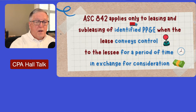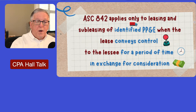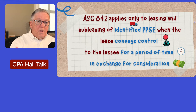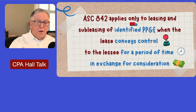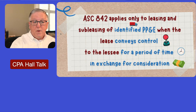There are really four things that have to be in play in order for 842 to apply to the agreement. One, it has to be an identified asset. Two, it conveys control. Three, for a period of time. And four, in exchange for consideration.